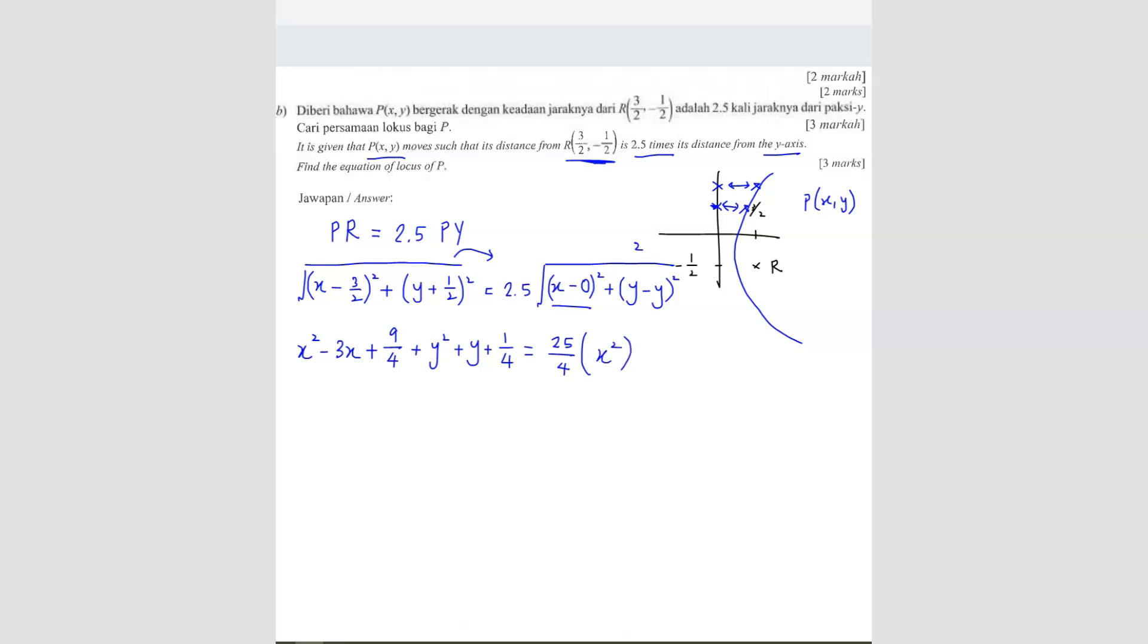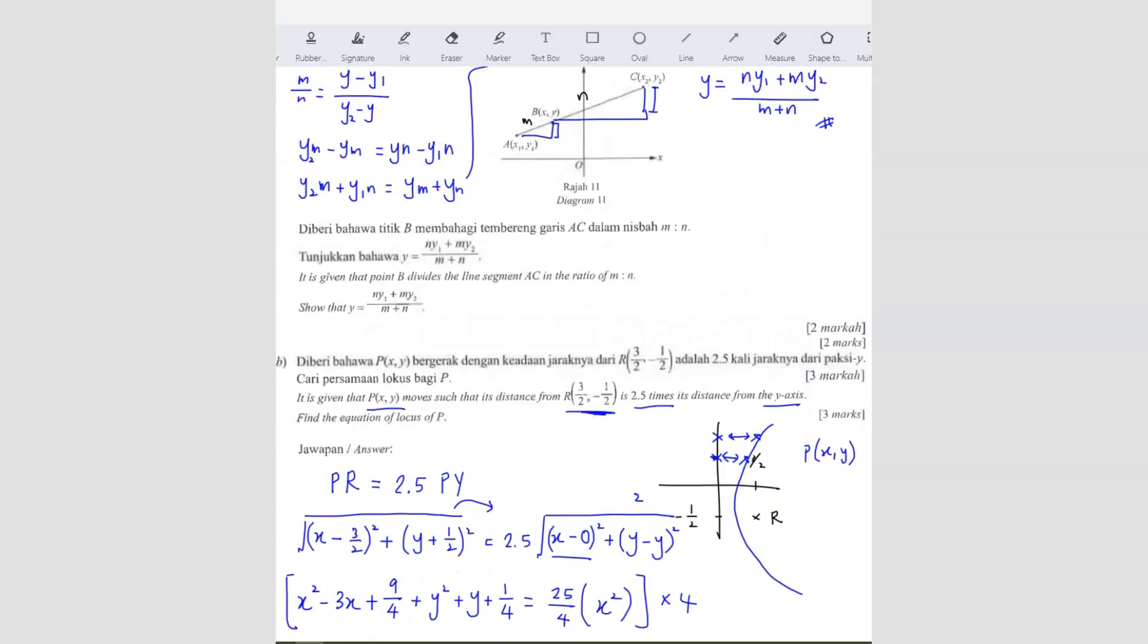You only have X square. To remove all this 4, I'm going to take the whole thing times by 4. So I get 4X square minus 12X plus 9 plus 4Y square plus 4Y plus 1 equals to 25X square. I just have to rearrange all this. I'm going to bring everything to the right so that I get a positive X square. So I should get 21X square minus 4Y square, and then we have positive 12X minus 4Y minus 10 equals to 0. So this is your answer.